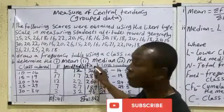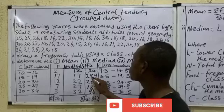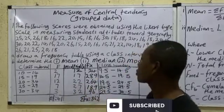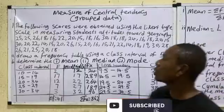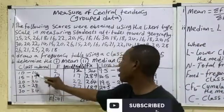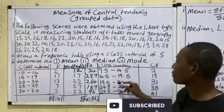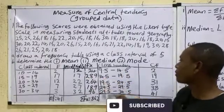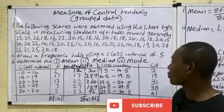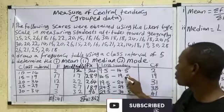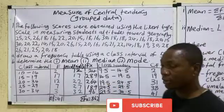Compute fx by multiplying frequency f by midpoint x: 2×12=24, 17×17=289, 12×23=276, and so on. For class boundaries, subtract 0.5 from the lower limit and add 0.5 to the upper limit: class 10–14 gives boundaries 9.5 and 14.5; class 15–19 gives 14.5 and 19.5. Note that the upper boundary of one class equals the lower boundary of the next.